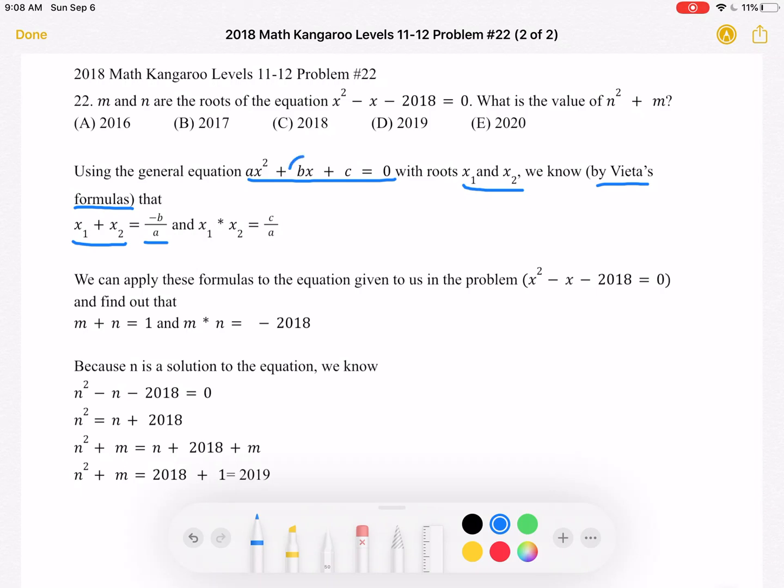So we take this number and take the negative of it and then put it over this number, a.